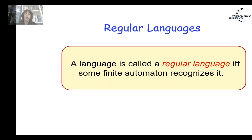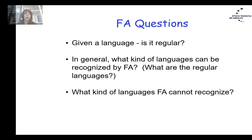The language of automaton A is formally L(A) = {W such that W belongs to sigma* and delta-cap(q_start, W) belongs to F}. We say that A recognizes L(A). An additional definition: a language is called a regular language if and only if some finite automaton recognizes it. Later in the course we will discuss what kinds of languages can be recognized by finite automata and what kinds cannot.